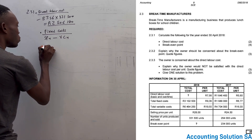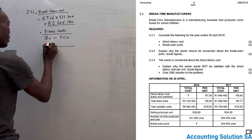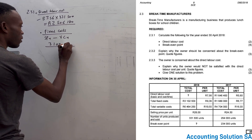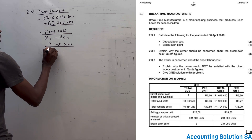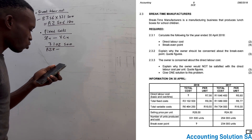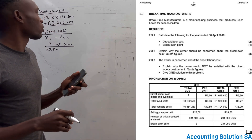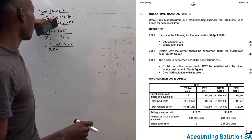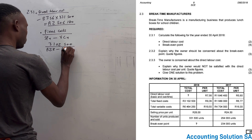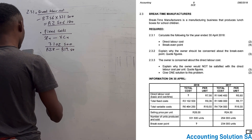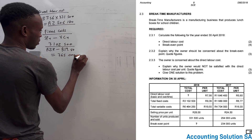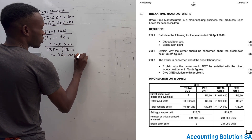If you check the fixed cost on the table, we are given R3,102,500. The selling price is R28 per unit. For variable cost, you don't have to include the direct labor we calculated separately because they already give us a total variable cost of R19.50. Doing this calculation gives you 365,000 units. The break-even point is normally expressed in units unless otherwise specified.